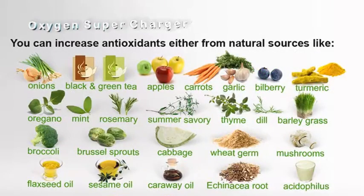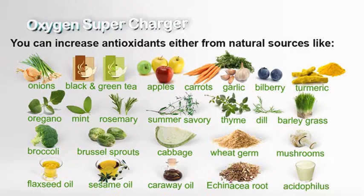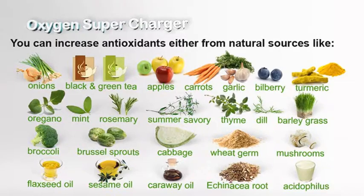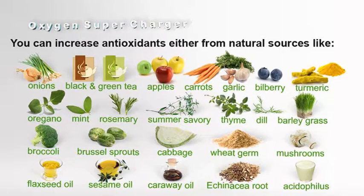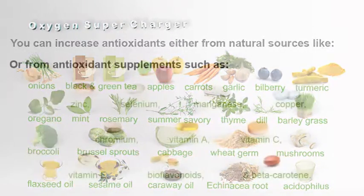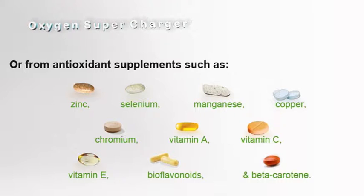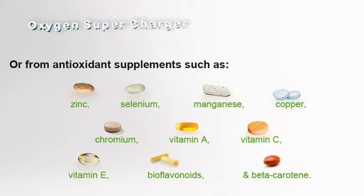You can increase antioxidants either from natural sources like carrots, broccoli, barley grass, black and green tea, apples, and blueberries, or from antioxidant supplements such as vitamin A, C, and E, zinc, selenium, and beta-carotene.